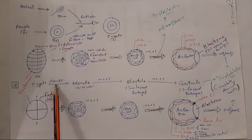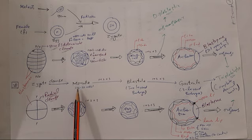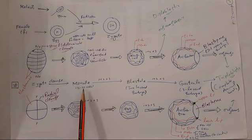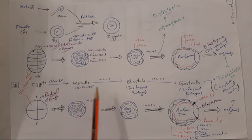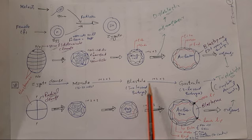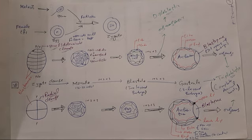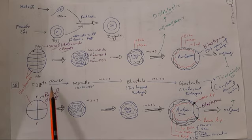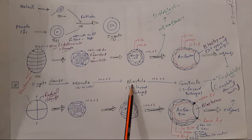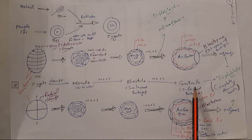The zygote undergoes mitotic divisions to form the morula — a solid ball of cells. From the morula, a hollow ball of cells or two-layered embryo is formed called blastula. From the blastula, a three-layered embryo is formed called gastrula. The outer layer is ectoderm, the middle layer is mesoderm, and the inner layer is endoderm. From these three layers, all other organs and organ systems are formed — this process is called organogenesis.